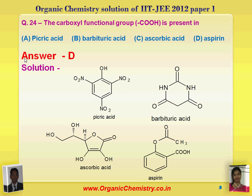The second question is: the carboxyl group COOH is present in which molecule? First picric acid, second barbituric acid, third ascorbic acid, and fourth is aspirin. When we carefully analyze the structures, picric acid is 2,4,6-trinitrophenol — it does not have a COOH group. Barbituric acid and ascorbic acid also do not have COOH groups. Instead, aspirin has the COOH group, so aspirin is the correct answer.